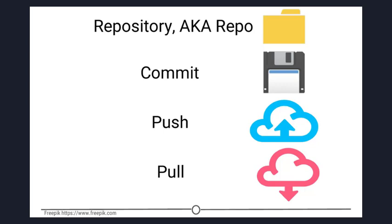Repositories are what are hosted on GitHub and through this interface, you can either keep your repositories private and share them with select collaborators, or you can make them public in which anybody can see your files and their history. To commit is to save your edits and the changes made. A commit is like a snapshot of your files.